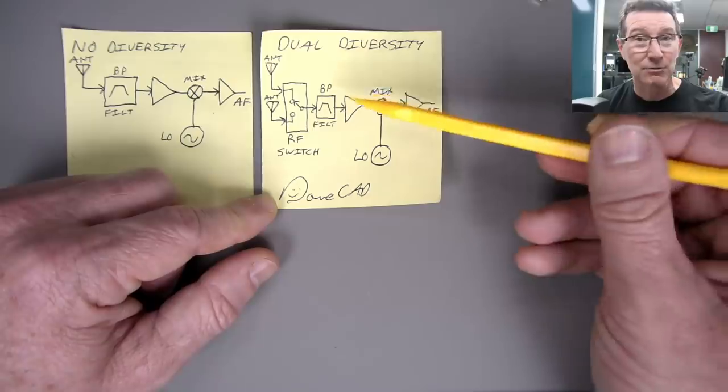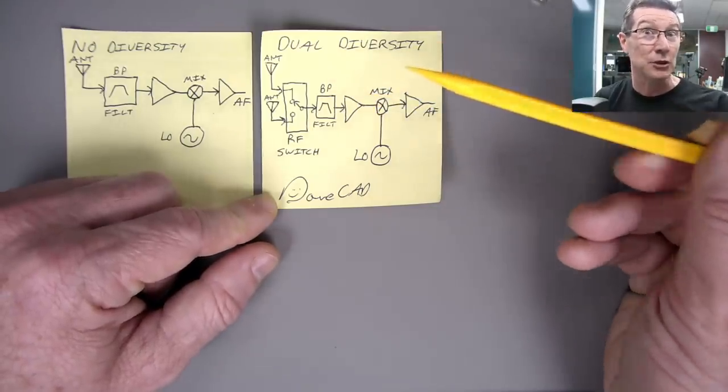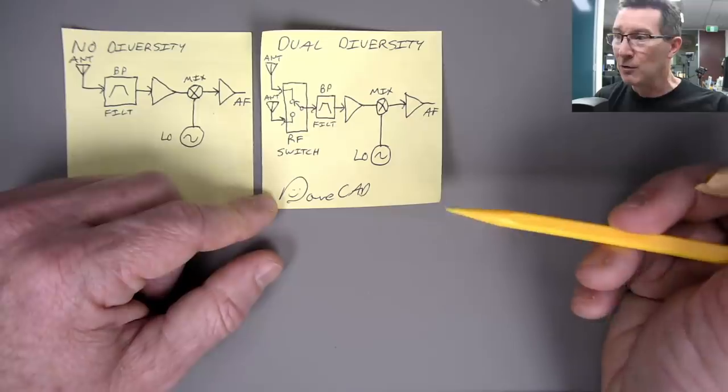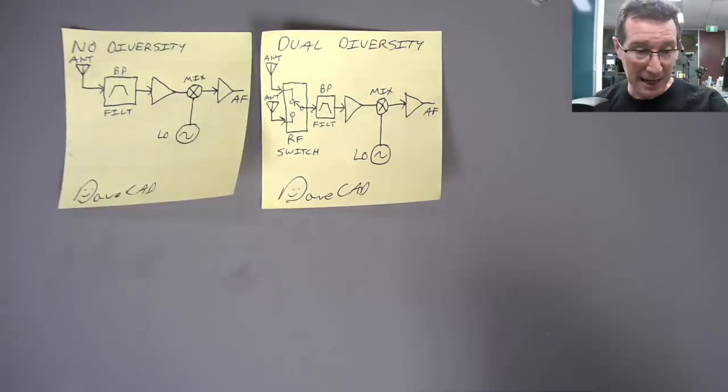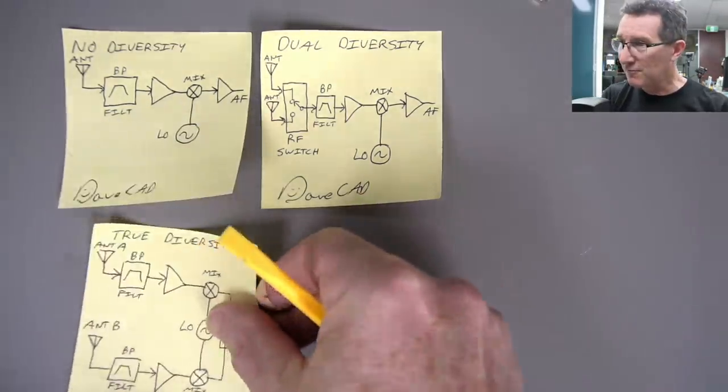There is, however, going to be some time delay when you actually switch between these and can actually measure them. So a dual diversity receiver, it's good, but it's not as good as a true diversity receiver, which is what we're looking at here today. And I have another DaveCad for that.